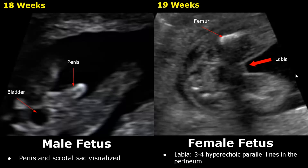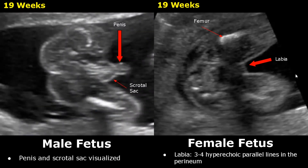As the fetus grows, the genitalia become more prominent and we can see them more easily. Here is a 19 weeks male fetus. We can see the penis and the scrotal sac more clearly.